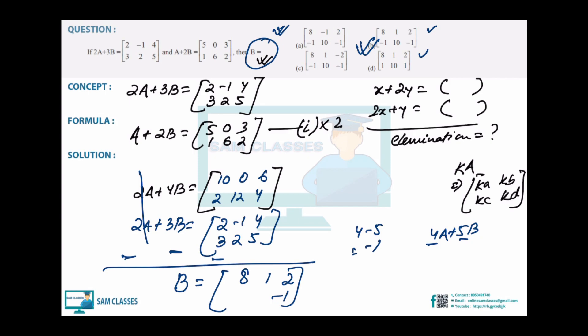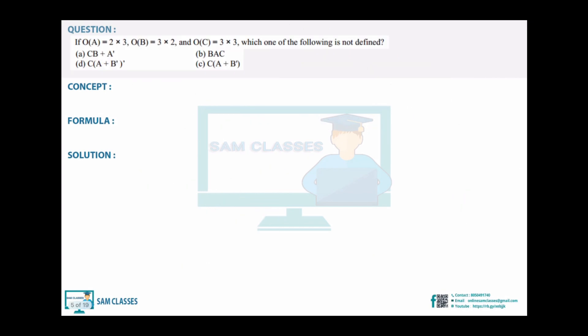Next question: they've given the order of A is 2×3, order of B is 3×2, and order of C is 3×3. They're asking which of the following is not defined. We need to use the concept of matrix multiplication.